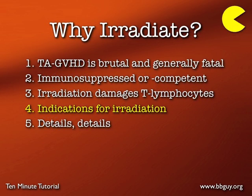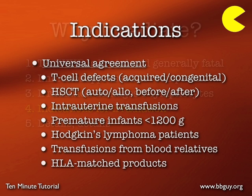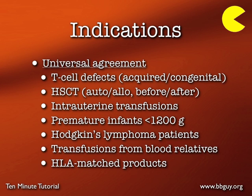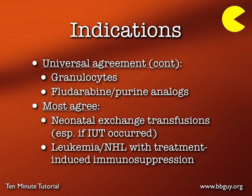Why do we do all this? To prevent TA-GvHD — but who is at risk? There is near-universal agreement that patients with T-cell defects whether acquired or congenital, patients receiving hematopoietic stem cell transplants, babies getting intrauterine transfusions or premature babies under 1200 grams, and patients with Hodgkin's lymphoma — due to its inherent immunodeficiency — should all receive irradiated blood products. The last two indications revolve around the one-way HLA match: transfusions from blood relatives and HLA-matched products, which can cause TA-GvHD even in immunocompetent recipients.